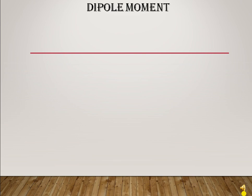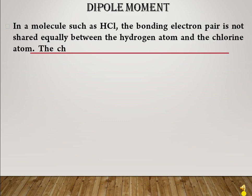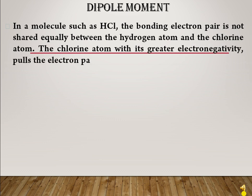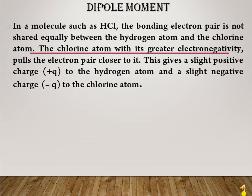Polar substances have the ability to develop a dipole. This concept is known as Dipole Moment. In a molecule such as HCl, which is polar in nature, the bonding electron is not shared equally between the hydrogen atom and chlorine atom. The chlorine atom, with greater electronegativity, pulls the electron closer to it, giving a slight positive charge to hydrogen and a slight negative charge to chlorine.